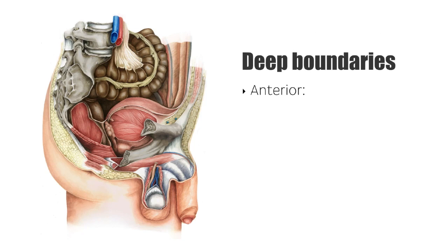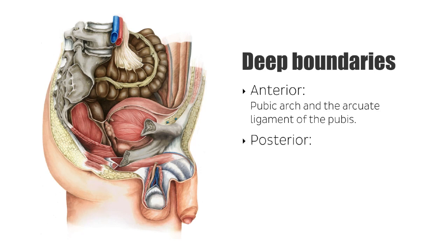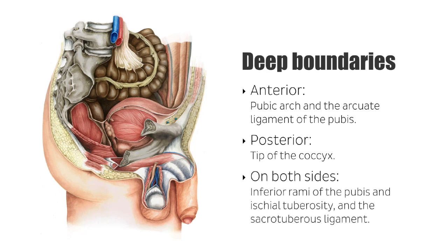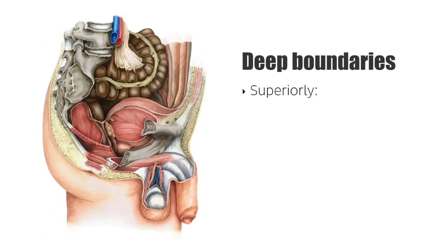There are some deep boundaries of the perineum worth noting. Anteriorly, the pubic arch and the arcuate ligament of the pubis define the anterior boundaries. Posteriorly, the tip of the coccyx defines the posterior deep boundary, visible here on this image. On both sides we find the inferior rami of the pubis, the ischial tuberosity, and the sacrotuberous ligament. Superiorly is the pelvic floor, and inferiorly you find skin and fascia.